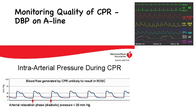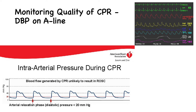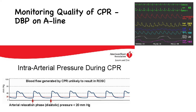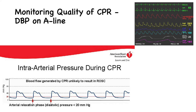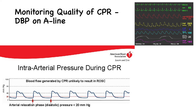Another tool for monitoring CPR quality is the A-line — invasive blood pressure monitoring with an arterial line. An A-line must be present at the time of cardiac arrest; this would typically be a patient monitored in ICU, a theater setting, or during interhospital transport. The way to use the A-line is: if the diastolic blood pressure — also known as the intra-arterial relaxation phase — is less than 20, this is an indicator to improve the quality of CPR.